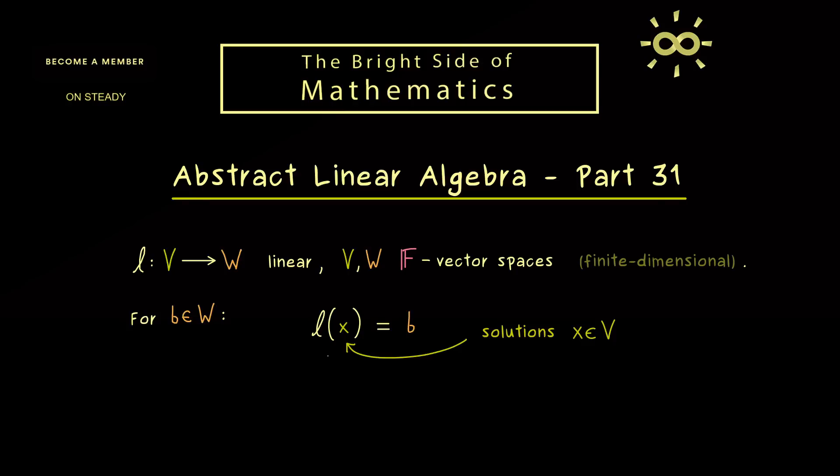In other words, this is the abstract formulation for solving a system of linear equations. We see that immediately because we can just choose bases and a matrix representation of the linear map l. And then what we have is a matrix times a column vector equals a column vector.